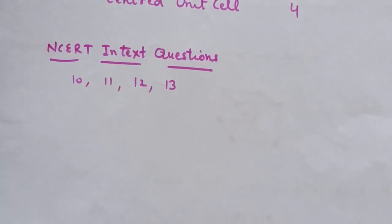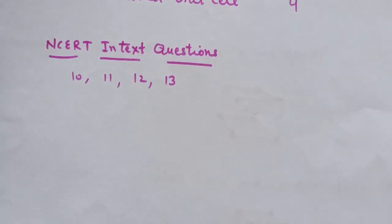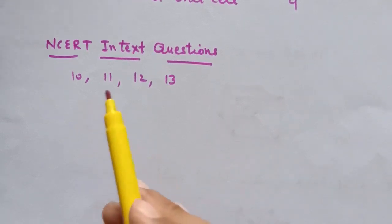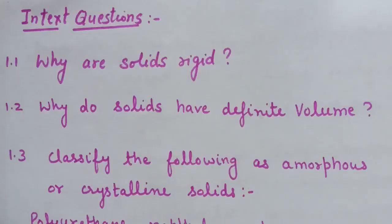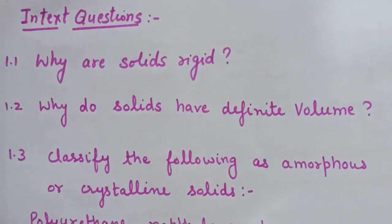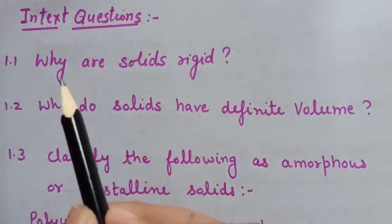In summary: simple cubic unit cell has 1 atom, body centered unit cell has 2 atoms, and face centered unit cell has 4 atoms per unit cell. After this topic, you can solve NCERT in-text questions 10, 11, 12, and 13. Now I will discuss the homework solution of Lecture No. 1.